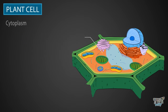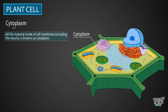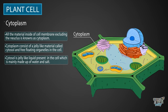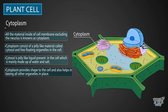Next is cytoplasm. All the material inside of the cell membrane, excluding the nucleus, is known as cytoplasm. Cytoplasm consists of a jelly-like material called cytosol and free-floating organelles in the cell, including the nucleus. Cytosol is this jelly-like liquid present in the cell, mainly made up of water and salt. Cytoplasm is the cytosol along with the free-floating organelles that provides shape to the cell and also helps in keeping all other organelles in place.